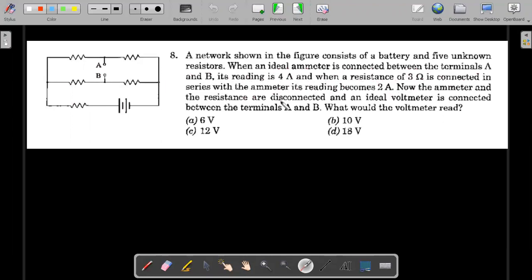Now the ammeter and the resistance are disconnected, and an ideal voltmeter is connected between the terminals A and B again. What would the voltmeter read? So you want to give it a try on your own, just pause the video and try it for one or two minutes, and then we go ahead with the solutions.